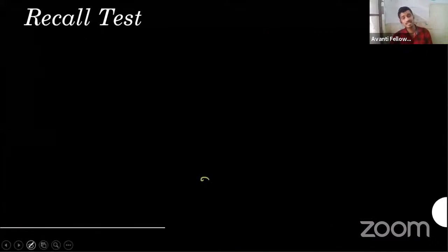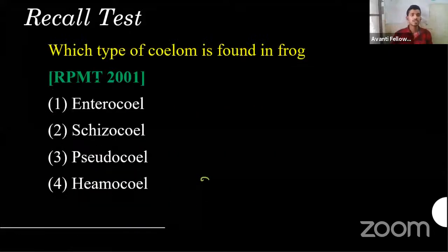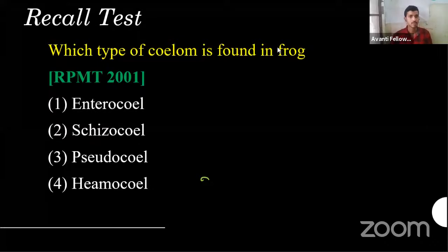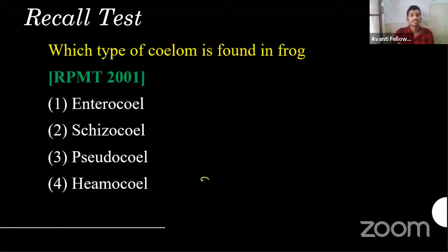That's what we did in the last class. So for the recall test — the question is: which type of coelom is found in a frog? Options: enterocoelom, schizocoelom, pseudocoelom, or haemocoelom. Note that 'coelom' and 'coel' are used interchangeably — they mean the same thing. I'm launching the poll now.